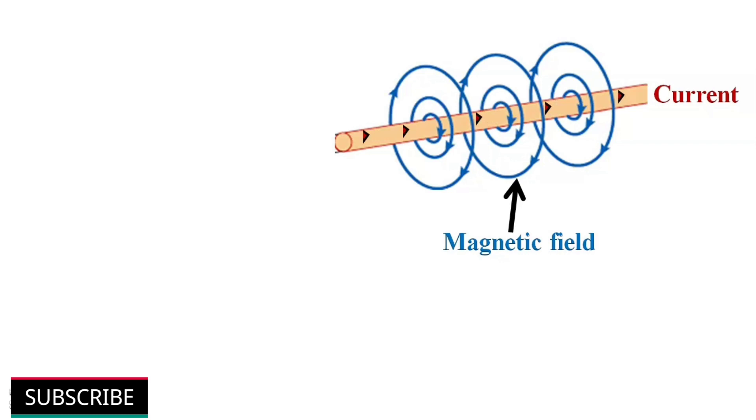Whenever current flows through a conductor, a magnetic field develops around it. The strength of the magnetic field depends upon the value of current passing through the conductor.